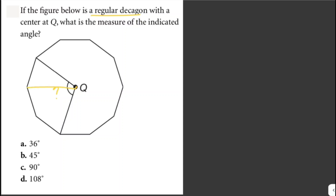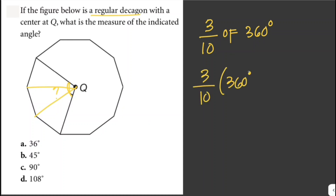So when we divide this decagon, we have ten sections, and the indicated angle includes three of those ten sections. The sum of the angles in a full rotation around the center is 360 degrees. So this is just three out of ten of 360 degrees: three over ten times 360 degrees, which is equal to 108 degrees.